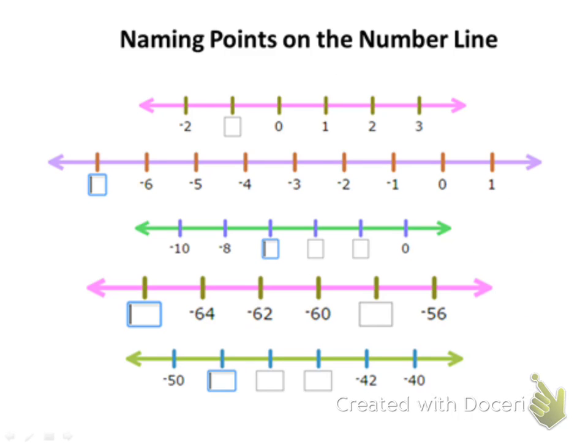When you're looking at number lines, you're going to have to be able to name points on them, or spaces on the number line. To do that, you need to look at what interval the number line is going from. So let's look at this first one here. Our numbers are increasing by an amount of one each time — from 0 to 1 is 1, 1 to 2 is 1, 2 to 3 is 1.